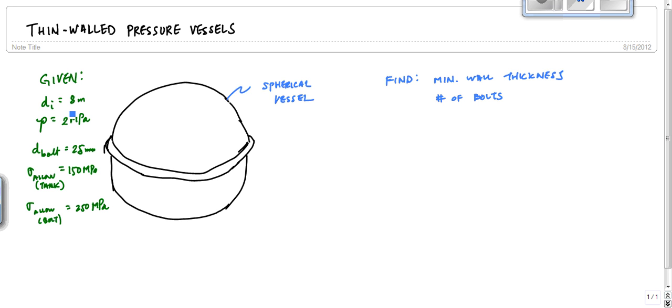We have the inner diameter of the sphere, which looks more like a hamburger, of 8 meters, and the internal pressure of 2 megapascals. The diameter of each bolt is given to us as 25 millimeters. And then we have the allowable normal stress of the tank material is 150 megapascals, and the allowable normal stress of the bolt material is 250 megapascals.